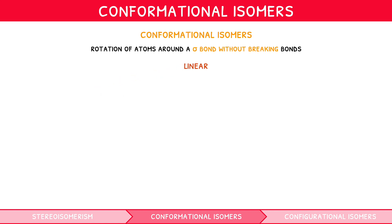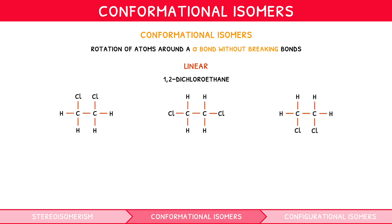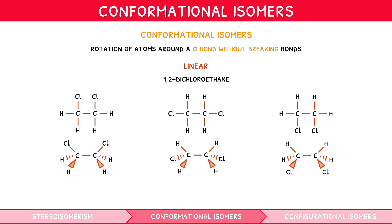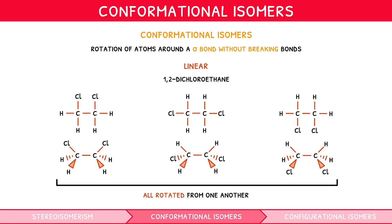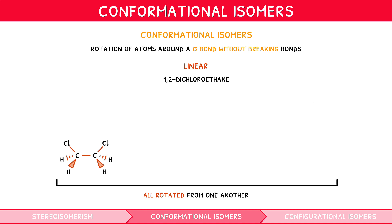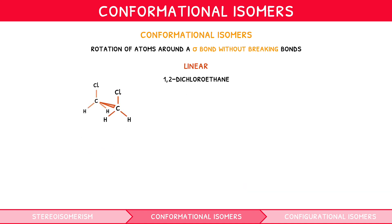Consider the linear example 1,2-dichloroethane. When drawing the 2D displayed formula, we could place the chlorine atoms on any of three positions on either carbon. If we visualise this in 3D, any movement between these positions would occur by rotation of all the groups attached to each carbon together. If we rotated the groups on both carbons so that the chlorine atoms aligned at the top, then looked at the molecule head-on, the closest chlorine atom would obscure the further one, like an eclipse. Hence, we call this an eclipse isomer.